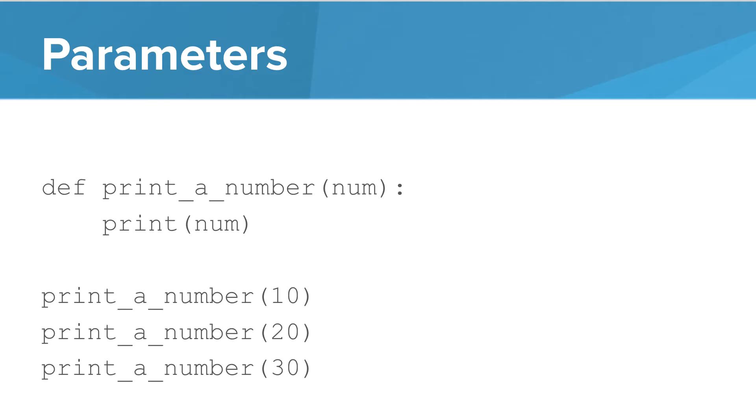Basically, the thing that goes in the parentheses of the function is called the parameter, and the thing that goes in the parentheses of the function when it's called are called arguments.